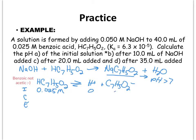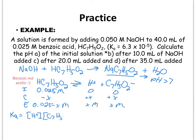For our ICE table, we know the initial concentration of the benzoic acid is 0.025 molar. We know that these ions are not present initially. The acid is going to lose some value of X, and both ion products are going to gain some value of X. So we know our equilibrium values by completing the table. From this, we can write our Ka expression as products over reactants.